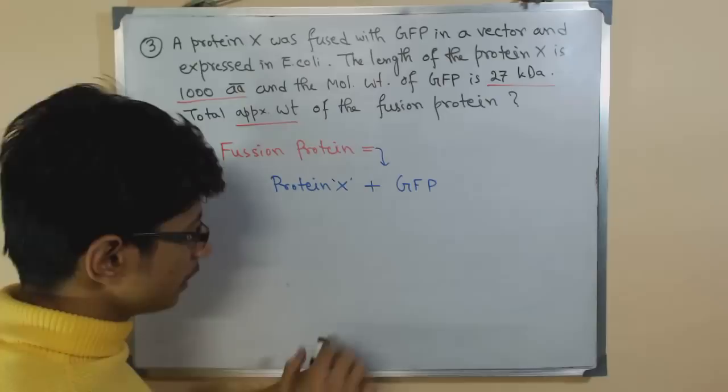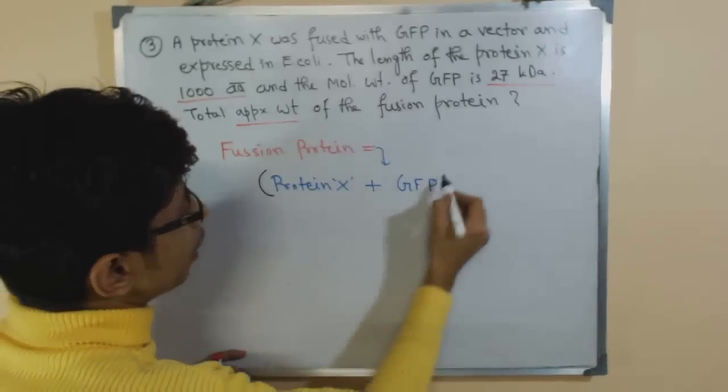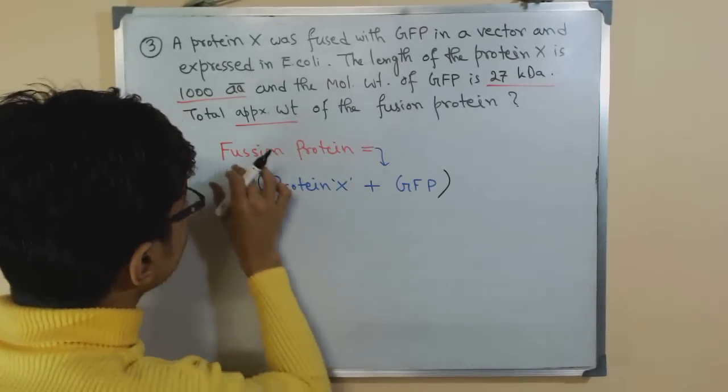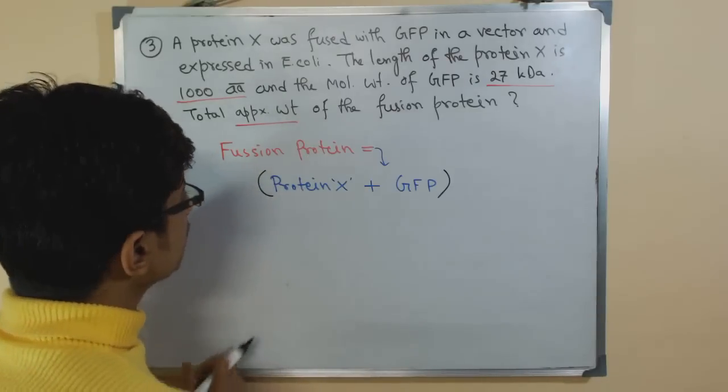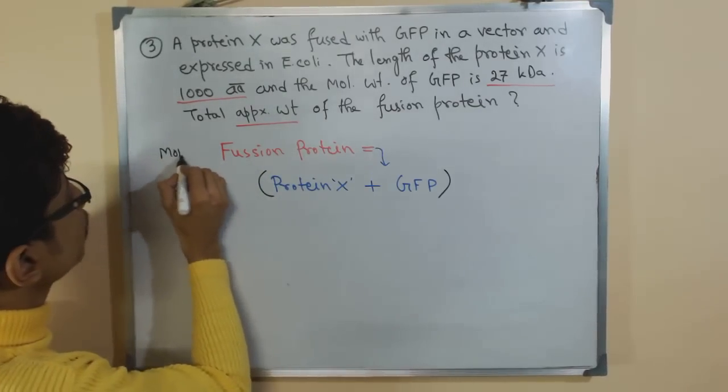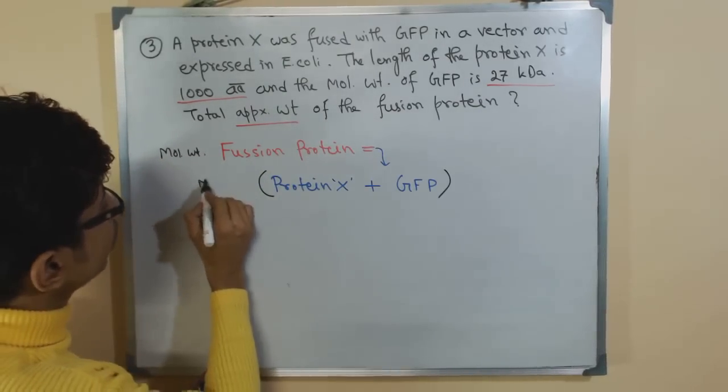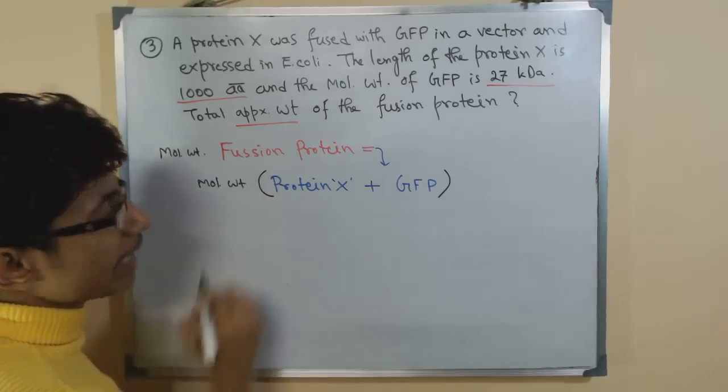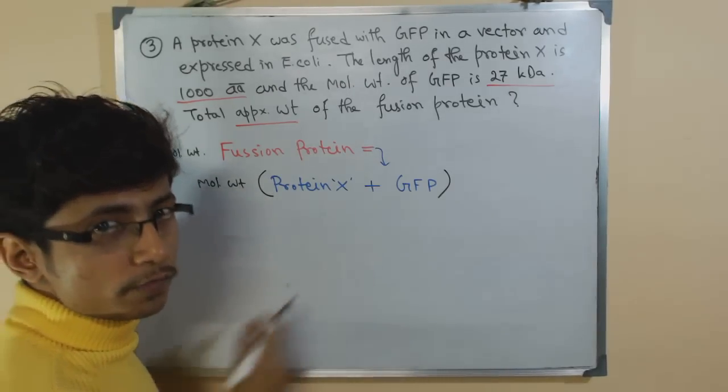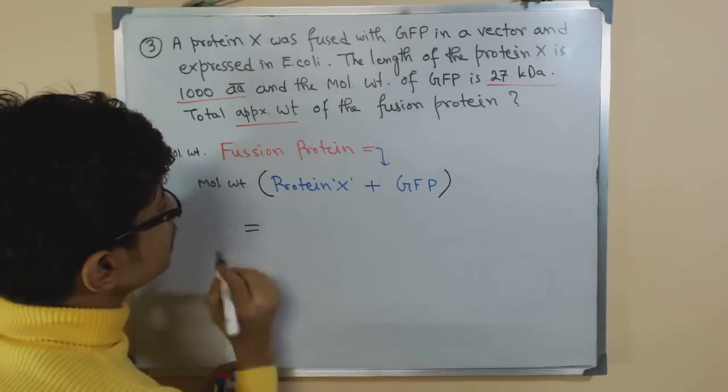It is added with GFP and that thing is termed as the fusion protein. So fusion protein here means both distinct protein X along with GFP. So the molecular weight of fusion protein will be the molecular weight of protein X plus the molecular weight of GFP.